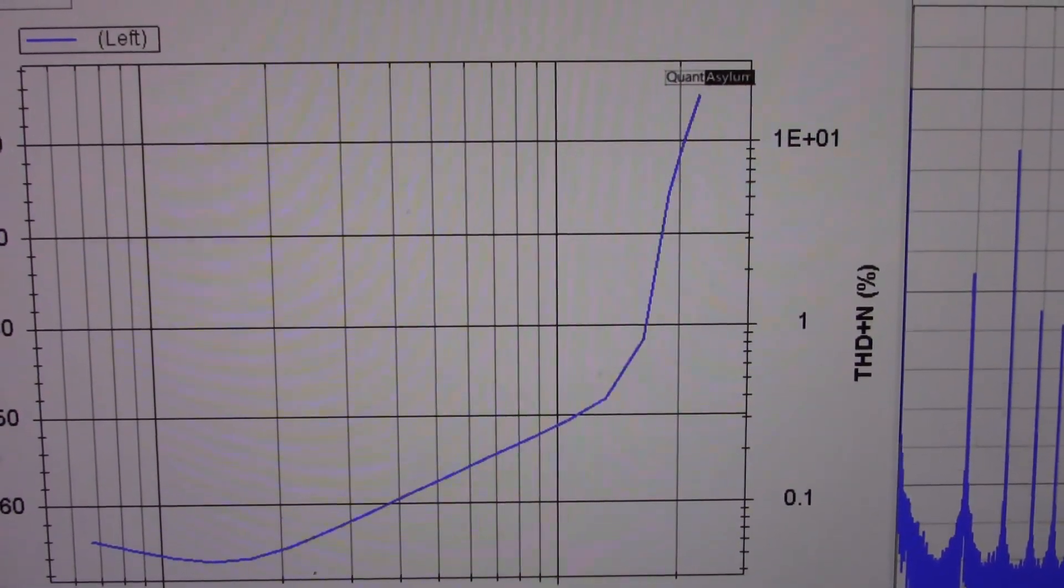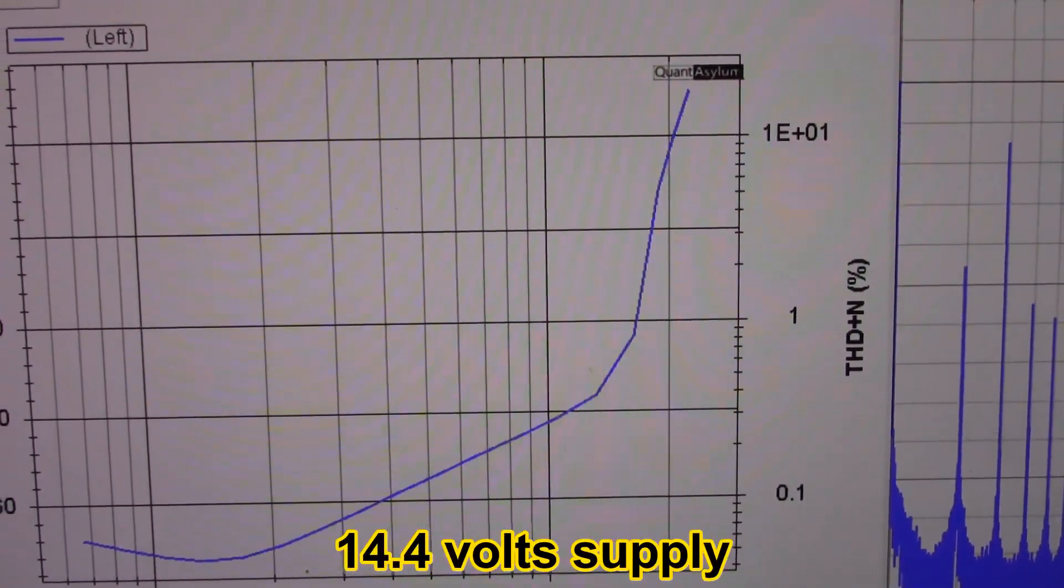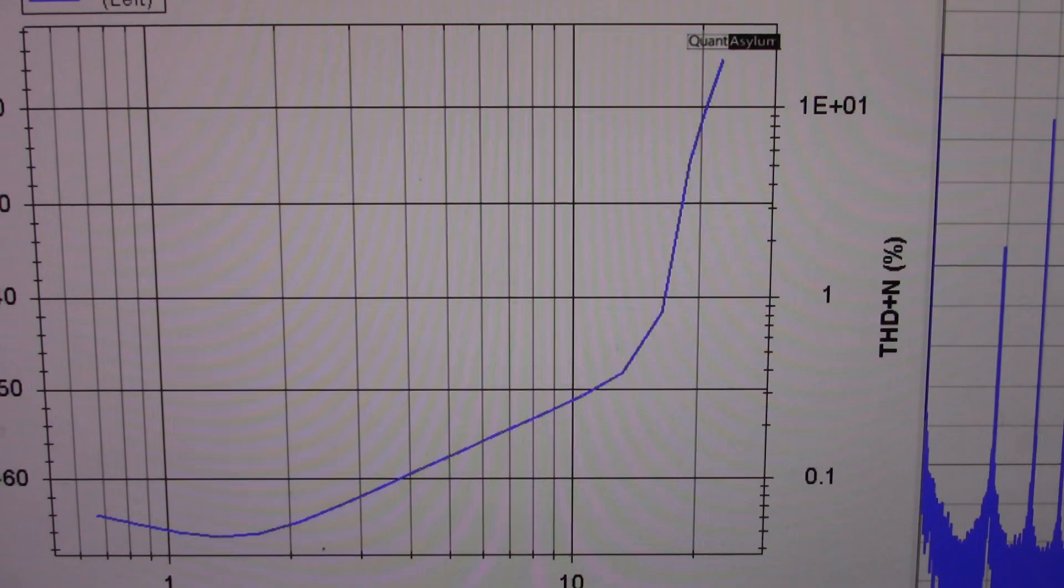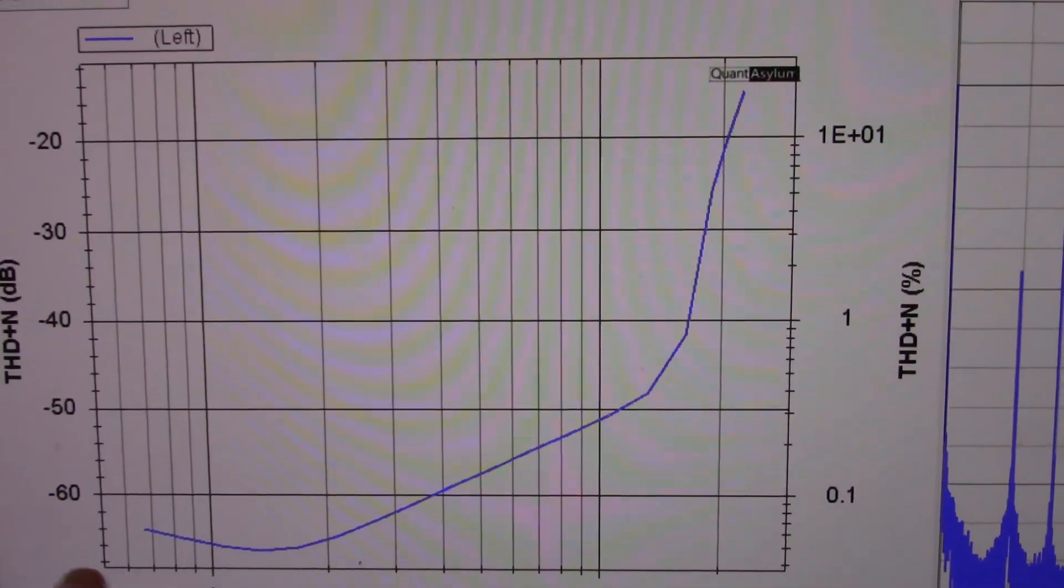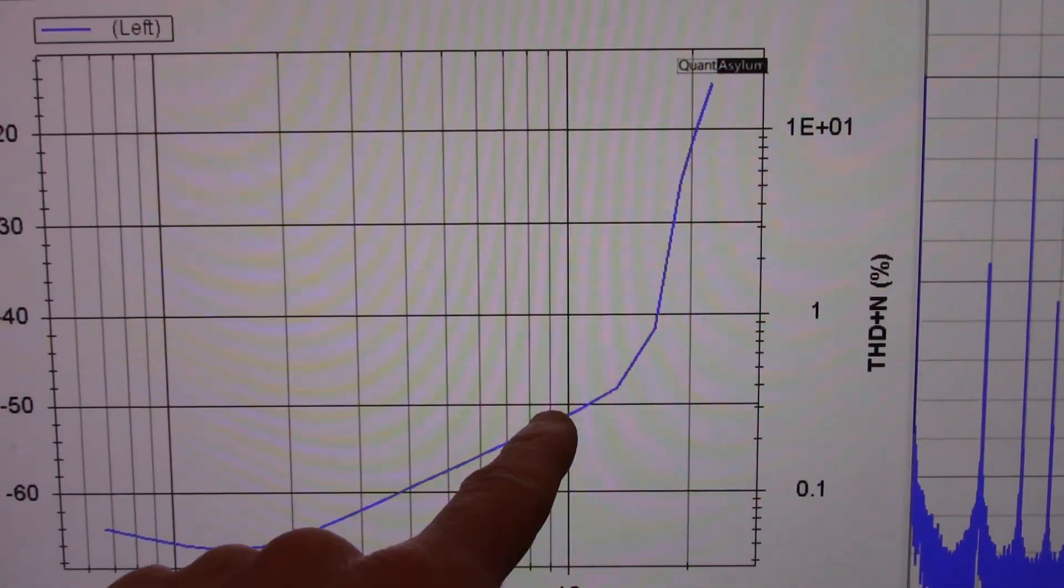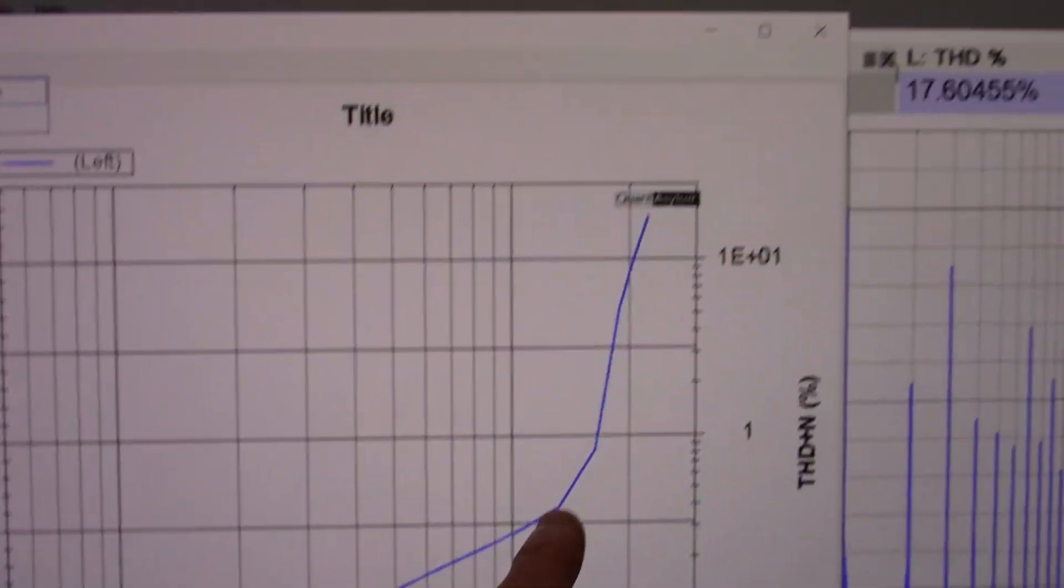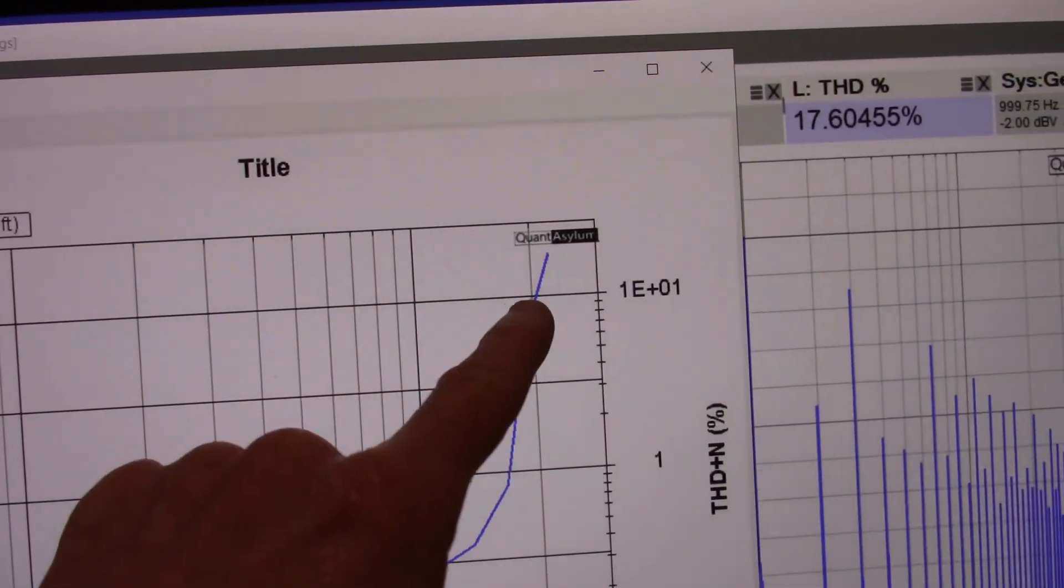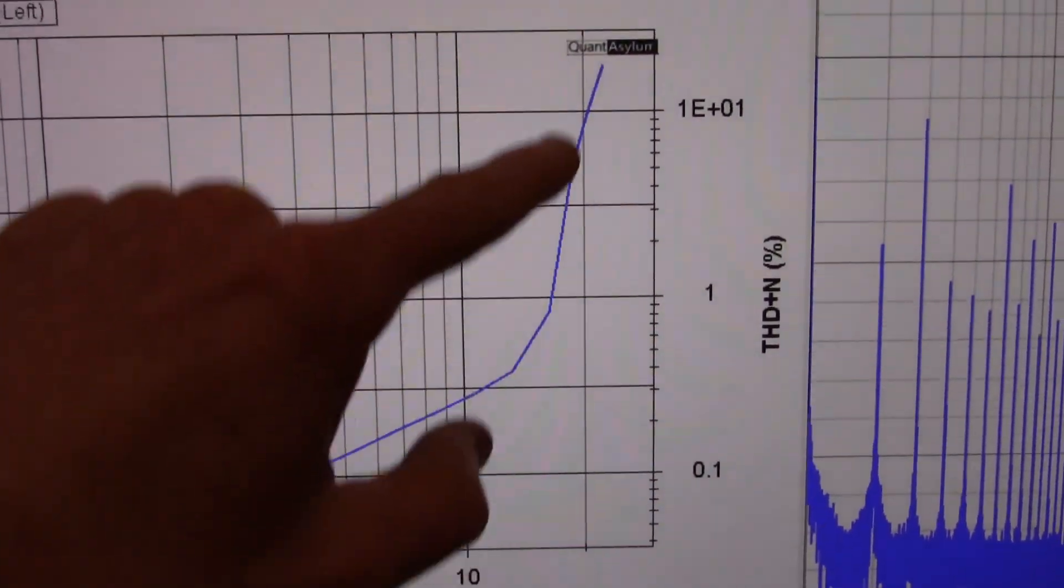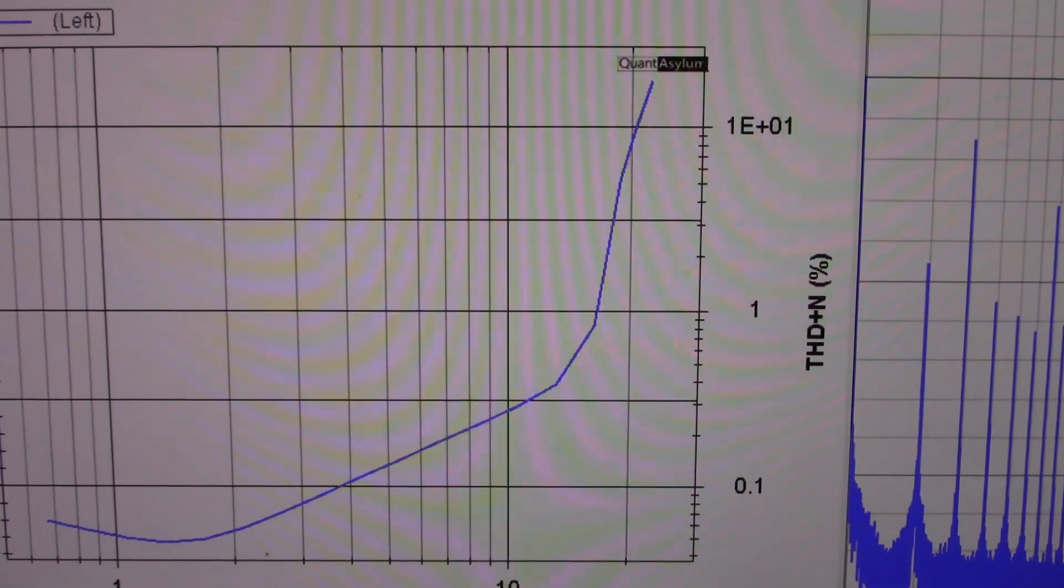Okay, here's distortion versus output power. I'm measuring this at 14.4, which they usually do that with these chips, which is the higher end of a car with its engine running. And you can see, you start clipping around here, which would be around, I don't know, 11 or 12 watts. And we're crossing close to 10% at around 20 watts, which, you know, that's what the thing's rated.